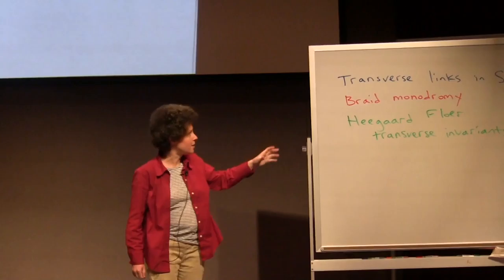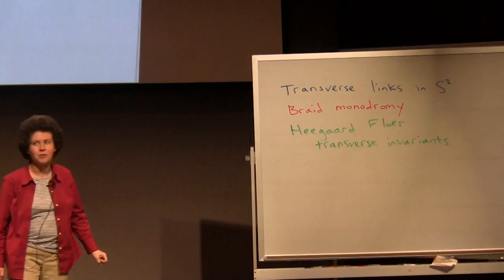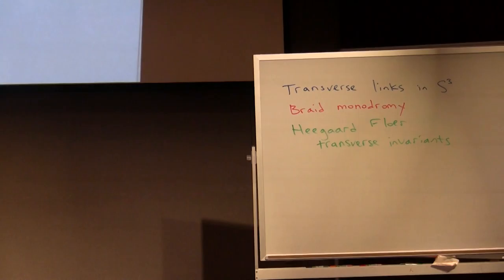I'm going to talk about a few things: transverse links in S3 and the interplay between the contact topology and the braid monodromy of the braid representing that link, and how the properties of the monodromy affect transverse invariants. I would like to thank the organizers for organizing all of this.